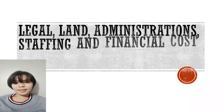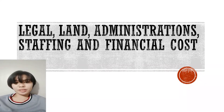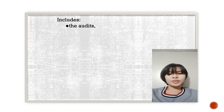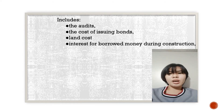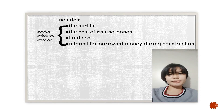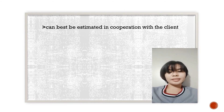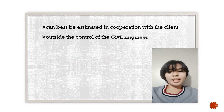Legal, land, administration, staffing, and financial costs. These costs include the following: the audits, the cost of issuing bonds, the land costs, and the interest for borrowed money during the construction. All of these are part of the probable total project costs. And it can be best estimated in cooperation with the client because it is usually outside the control of the civil engineer.